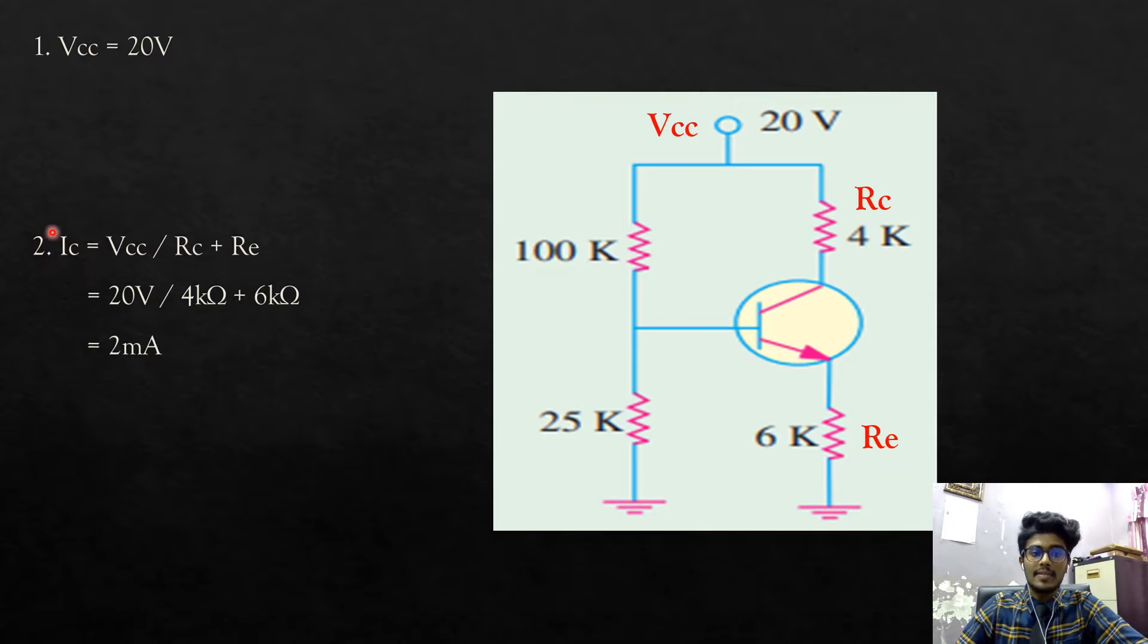For Ic saturated, Ic is equals to Vcc over Rc plus Re. Rc is the resistor connected with the collector of the transistor and Re is the resistor connected with the emitter of the transistor. So, Vcc over Rc plus Re, which is 20V over 4kohm plus 6kohm and we will get Ic saturated is 2mA.